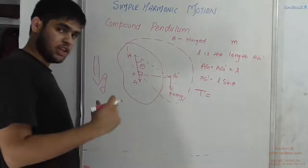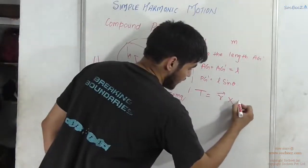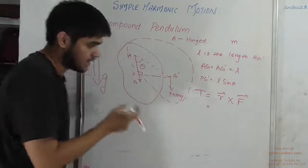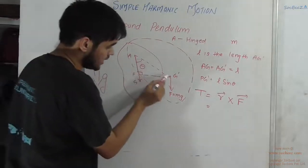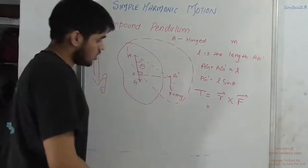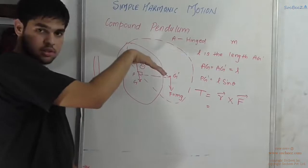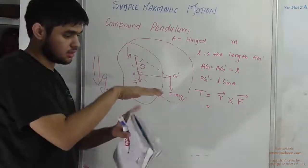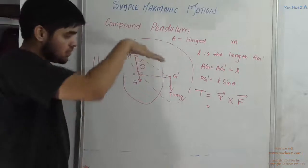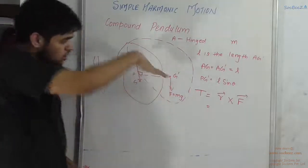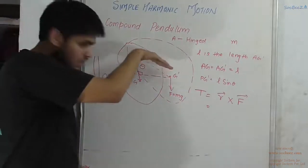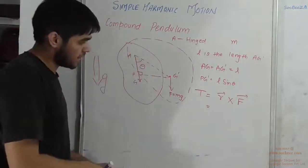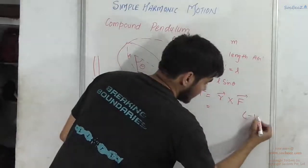How do we define torque? Torque is given by R vector cross F vector. The R vector points along AG' and F is mg downward. Taking the cross product R × F, using the right-hand rule — palm along R, curl toward the downward force — the thumb points into the plane of the board. So the torque is in the minus k-cap direction.